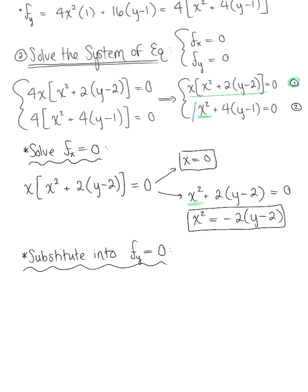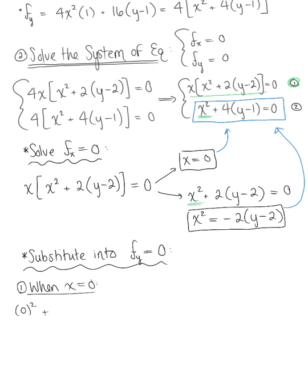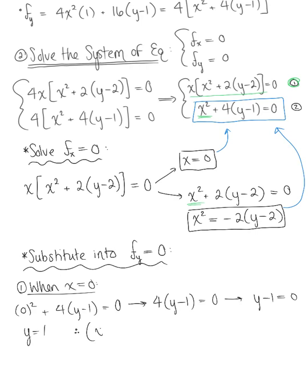We're substituting each case into the equation from the partial derivative with respect to y set equal to zero. Case 1: when x equals 0, we get 0 squared plus 4 multiplied by (y minus 1) equals 0. This gives 4 times (y minus 1) equals 0, so y minus 1 equals 0, and therefore y equals 1. So when x equals 0, y equals 1, giving us the critical point (0, 1).